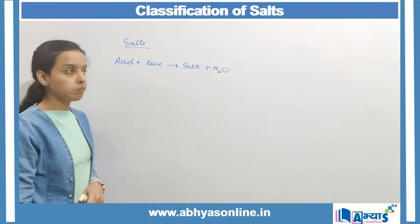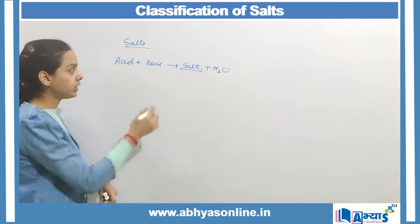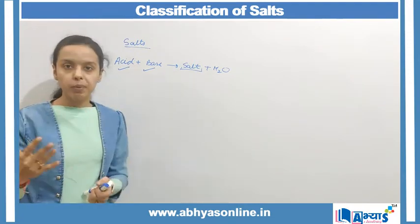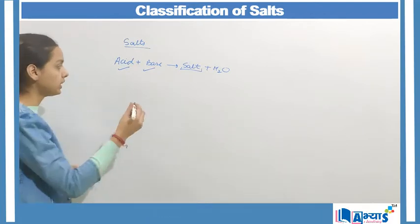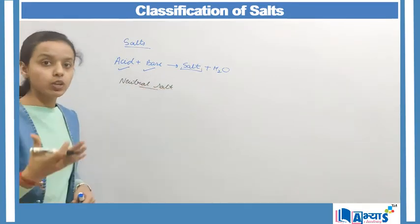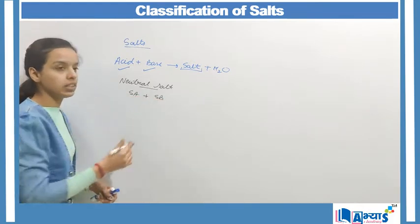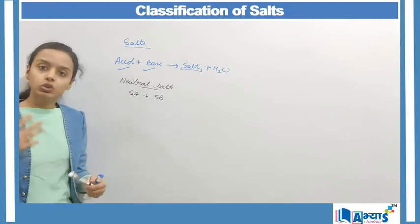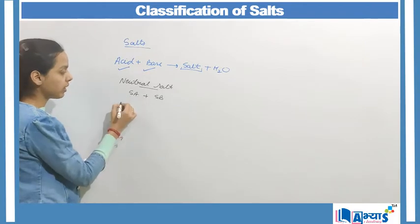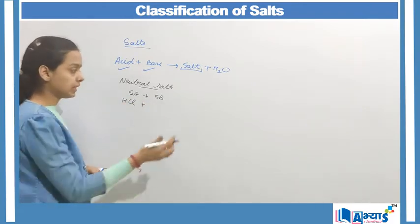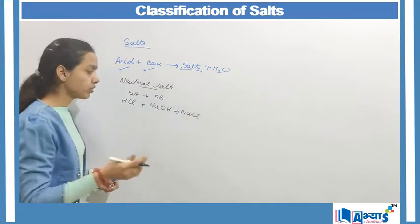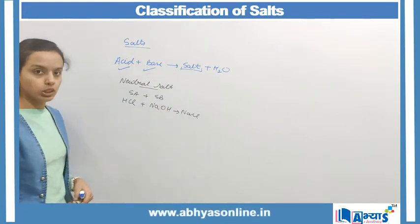This reaction is known as a neutralization reaction. The type of salt depends on the acid and the base. There are three important types of salts. The first classification is the neutral salt. A neutral salt is formed when a strong acid and a strong base react together — they neutralize the effect of each other. For example, hydrochloric acid reacting with NaOH gives a neutral salt, NaCl. Sodium chloride is referred to as a neutral salt.